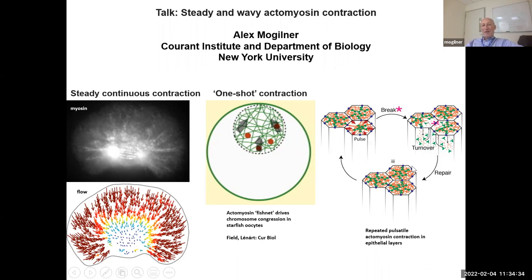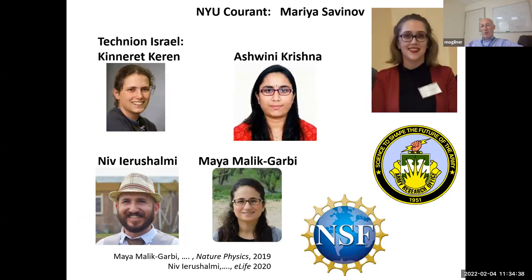So those are the people who did this work. The mathematical model I'll be showing you was created and investigated by Masha Savinov, who is a PhD student at Courant. And we are collaborating. I will tell you more about the experimental results and about the theory. And all the experimental results are from the lab of Kinneret Keren at Technion. The main driver of this project is Ashvini Krishna. So what I will tell you is not published yet, but you can get the flavor about the system by reading two published papers that were published in the last couple of years.